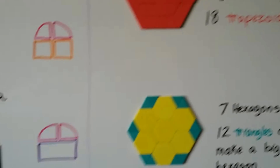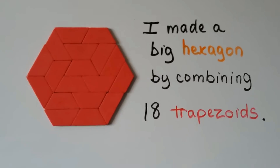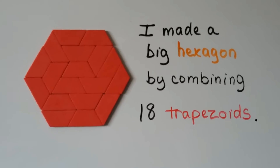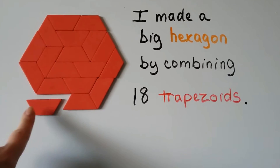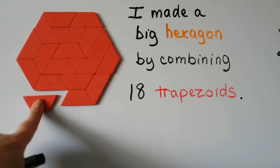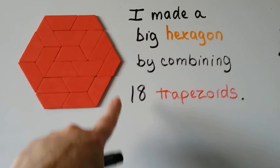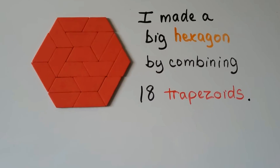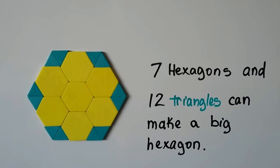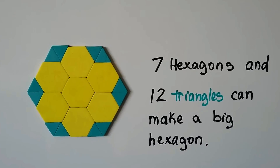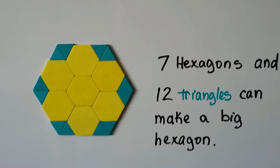I had fun making this: I made a big hexagon by combining 18 trapezoids. I was happy I had enough red trapezoids — I was afraid I was going to run out. I just put them together and it made a very big hexagon. Then I took seven hexagons and 12 triangles and made an even bigger hexagon. It looks like a flower, doesn't it?